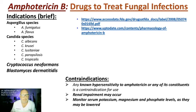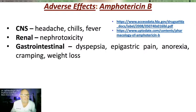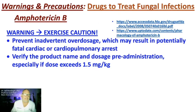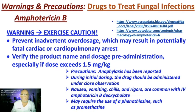Be aware that renal impairment can occur when patients are on this drug. You need to monitor serum potassium, magnesium, and phosphate levels. Adverse effects manifest in the CNS, renal system, GI system, as well as in the cardiovascular, respiratory, hematologic, and other systems. Exercise extreme caution — fatal cardiac and cardiopulmonary arrest have been reported. Verify the product name and dosage prior to administration. Anaphylaxis has been reported; administer the drug under close observation.